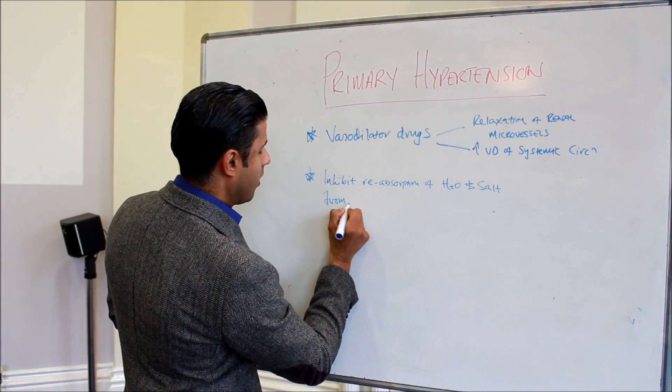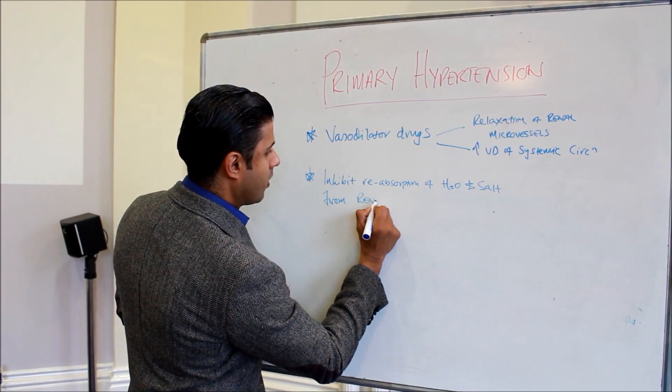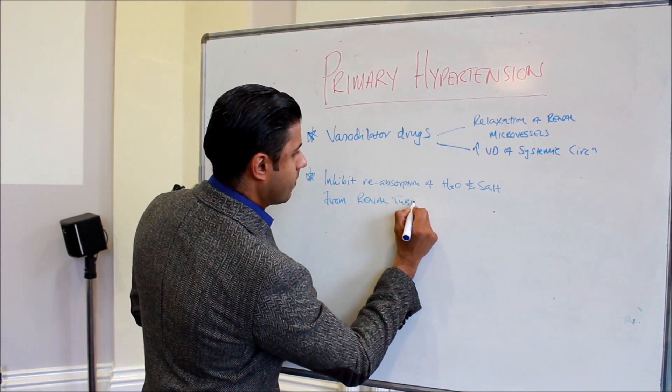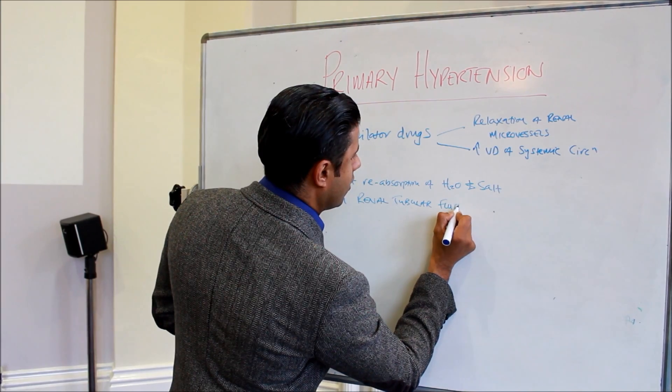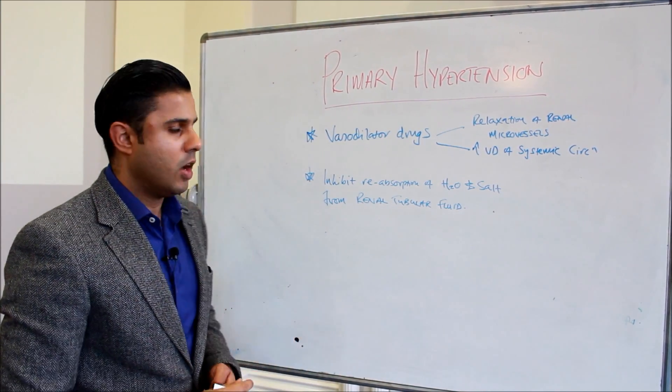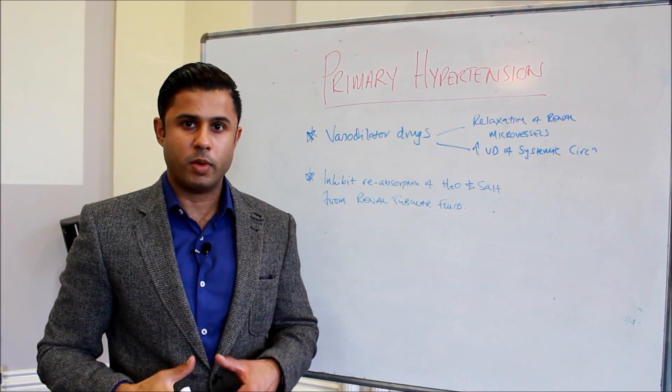From renal tubular fluid. These are drugs which will help to reduce blood volume and therefore blood pressure.